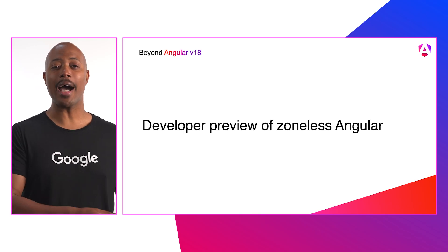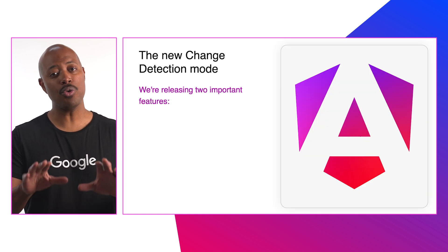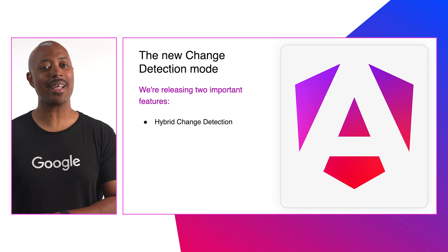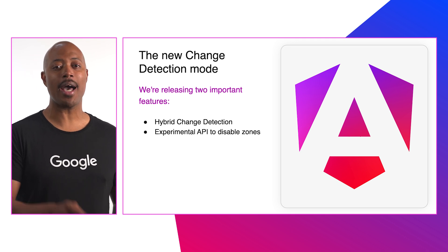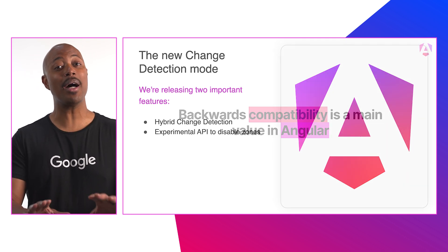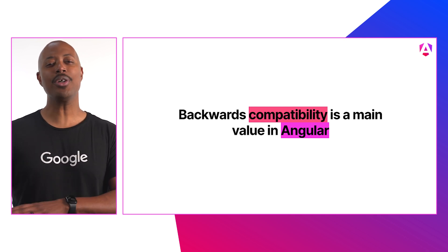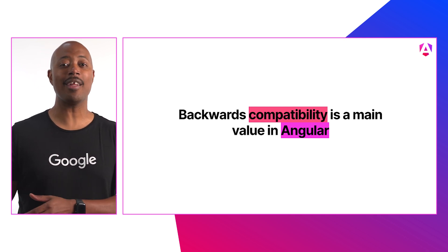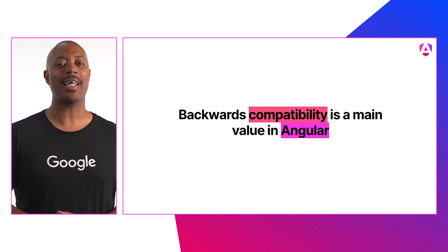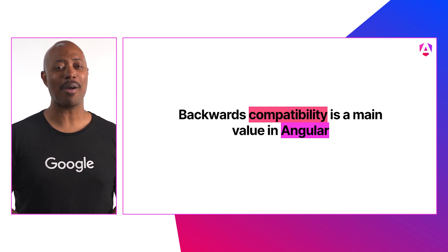First up, you can now try out the optional zones experience in Angular. We have two cool changes for you to check out: hybrid change detection and an experimental API to disable zones in your applications. But don't worry — we're doing optional zones, so you can still use the latest features of Angular V18 with your zones-based application, because you know that we love being backwards compatible.